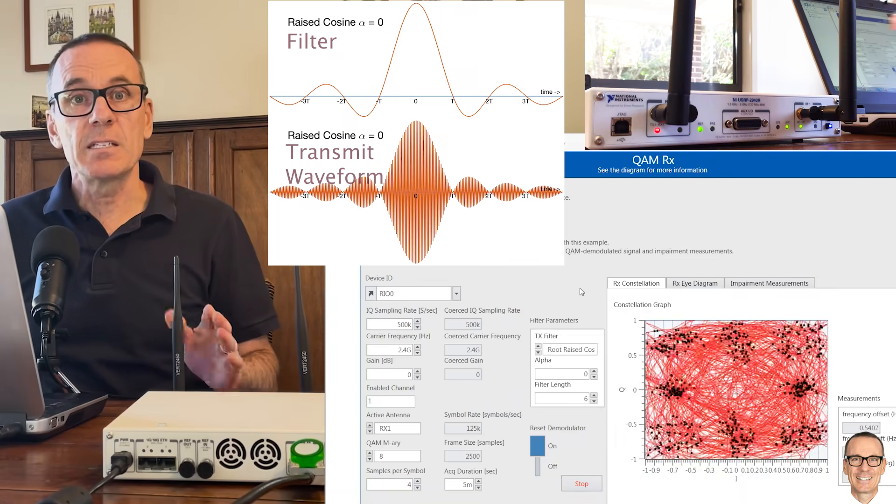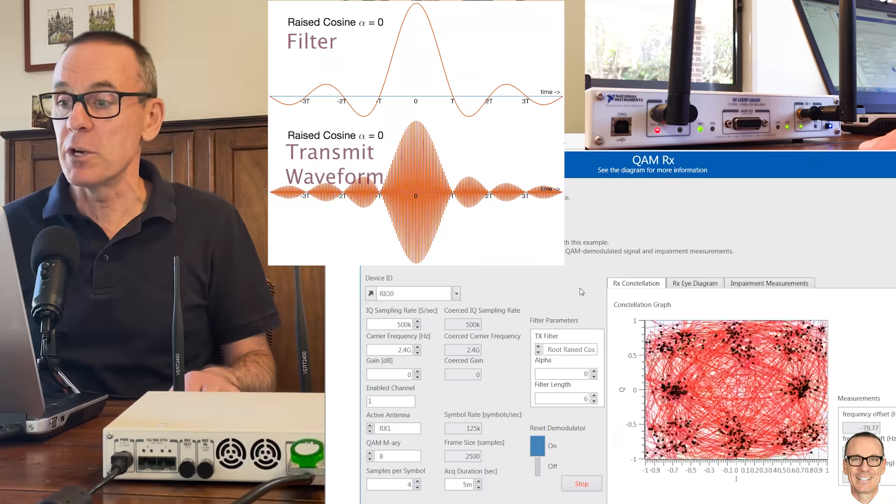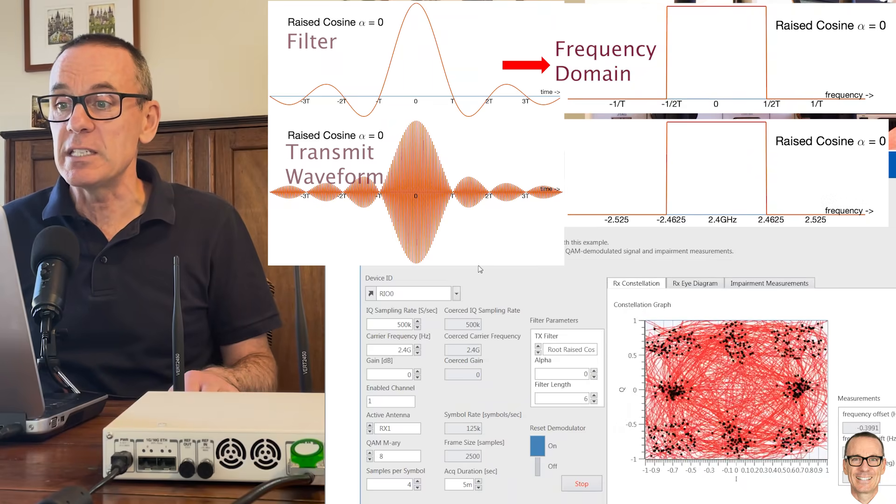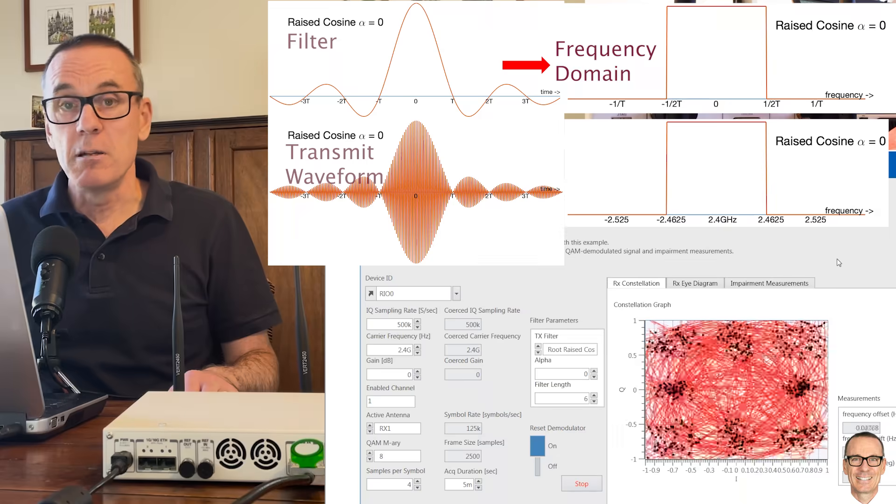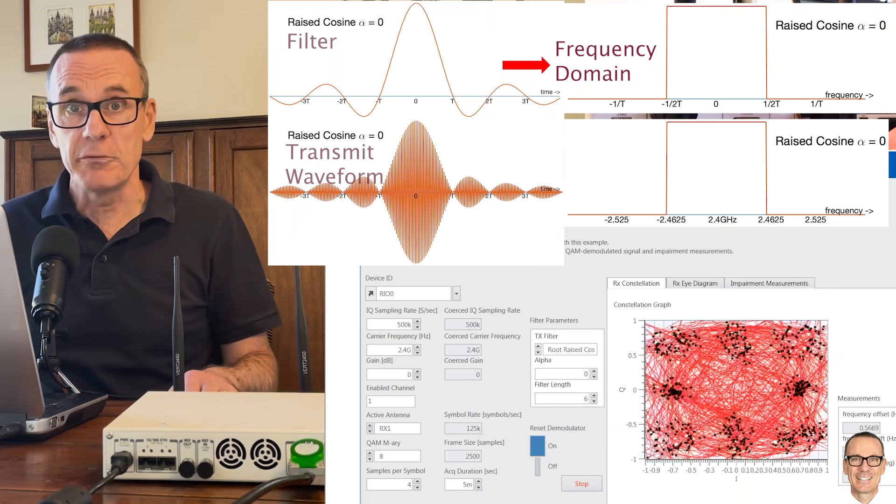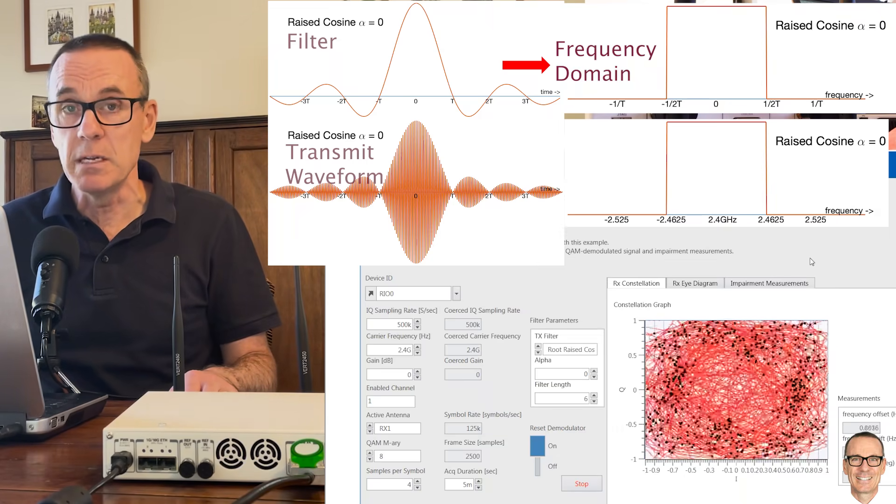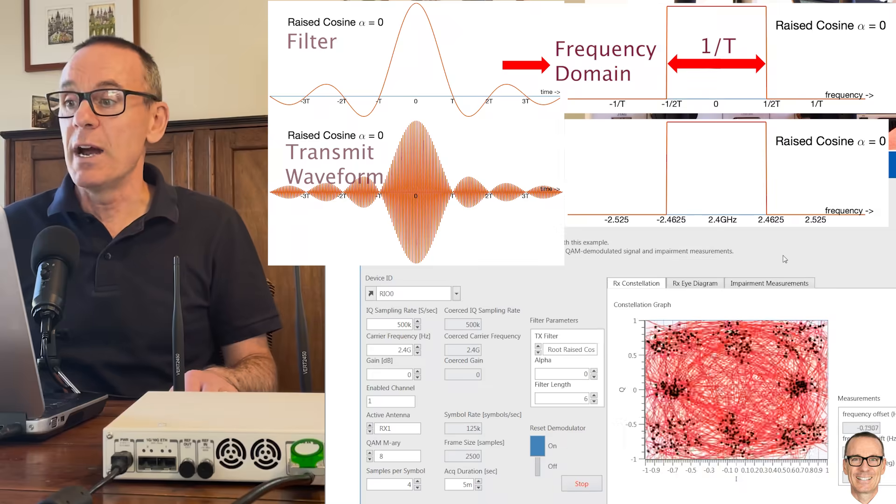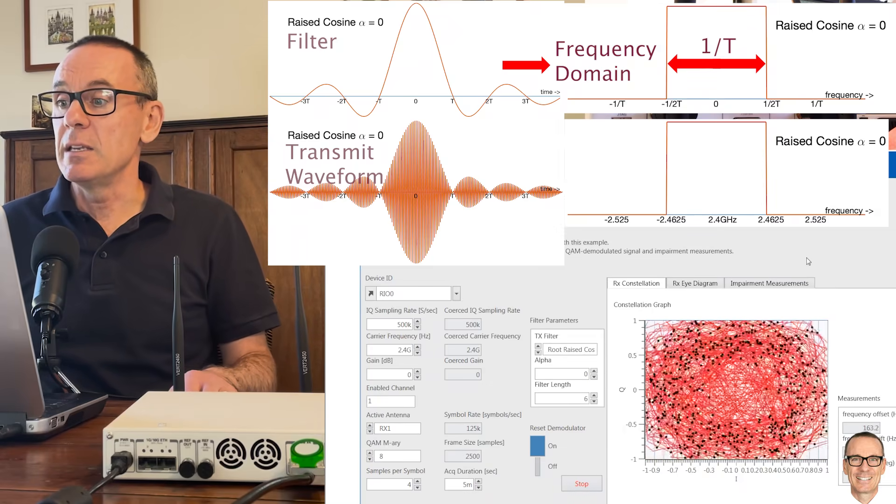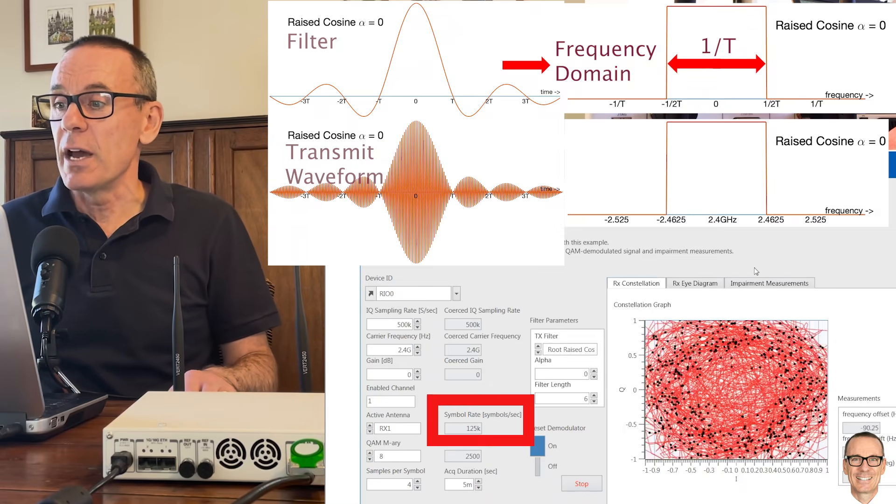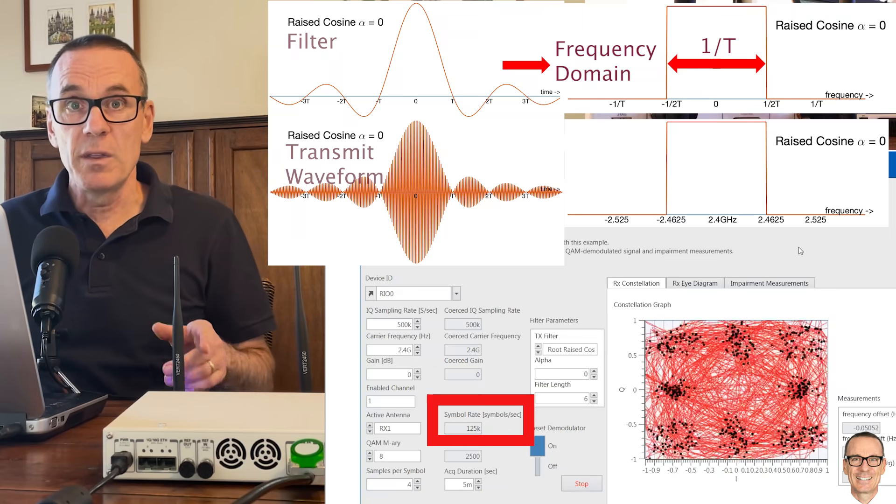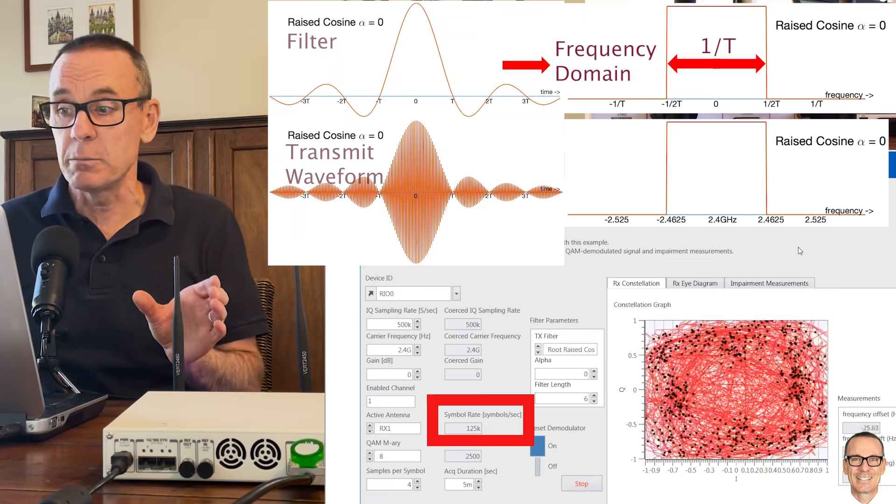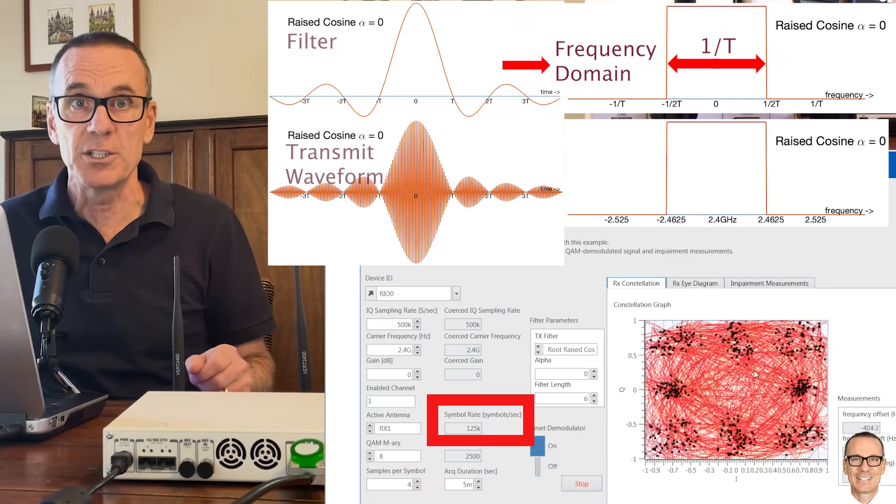And that's fantastic from a compression in the bandwidth point of view as we can see here with a sinc function in the time domain you have an exact square function in the frequency domain and it's occupying the minimum bandwidth possible, one on t. In this case one on t is 125 kilohertz. So this is great from a bandwidth compression but you can see the effect on the constellation diagram.